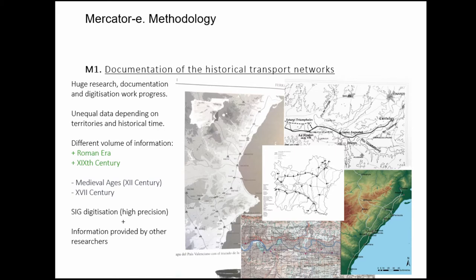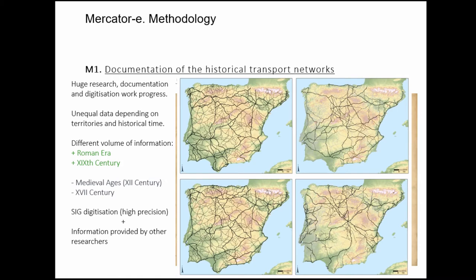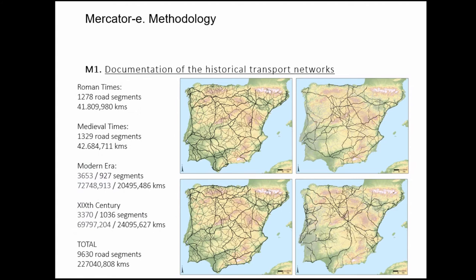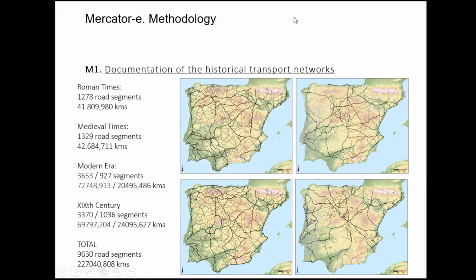The idea was to try to digitize everything in a GIS. These are the results of the networks of this project. I made four different time slices: one from Roman times, one from medieval times, one from the 17th century, and one from the 19th century. Just to give an idea, from Roman times and medieval times, I digitized over 40,000 kilometers of roads. For the modern era and the 19th century it was a little bit more — around 70,000 for each period — which gives a total of more than 200,000 kilometers of digitized roads for all of these periods.